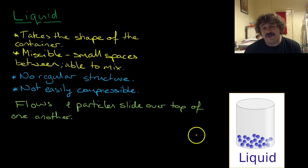Now, liquids are a very different story. They take the shape of the container. See, this fills up the container and it will take the shape of the container. Water in a teapot takes the shape of a teapot. Ice in a teapot stays the same shape as the ice was. It's miscible, which means there are small spaces between and it's able to mix. That's what miscible means.